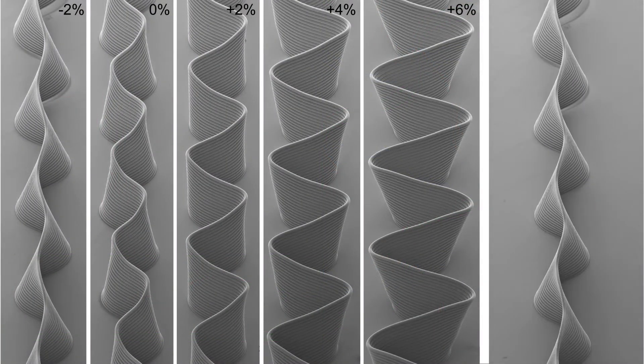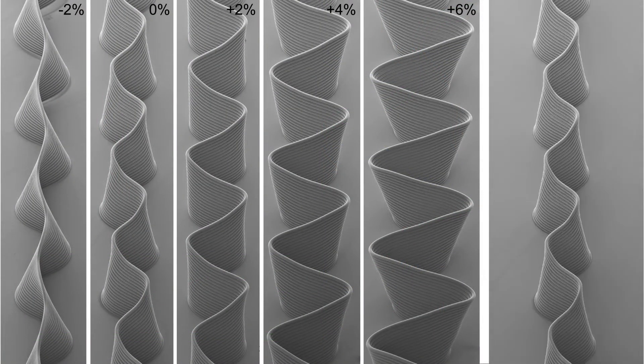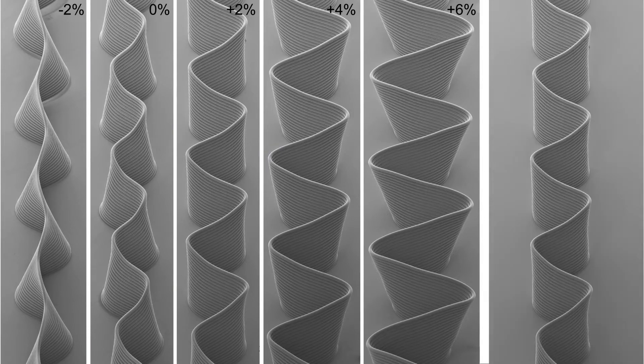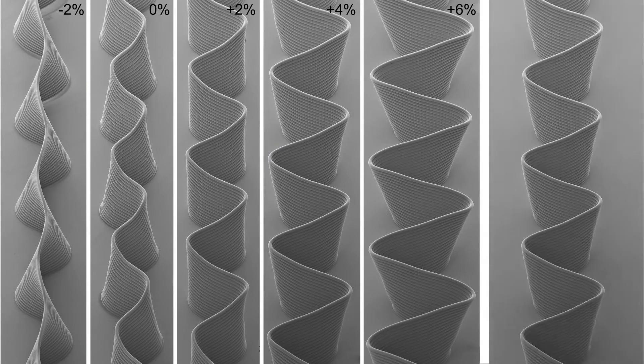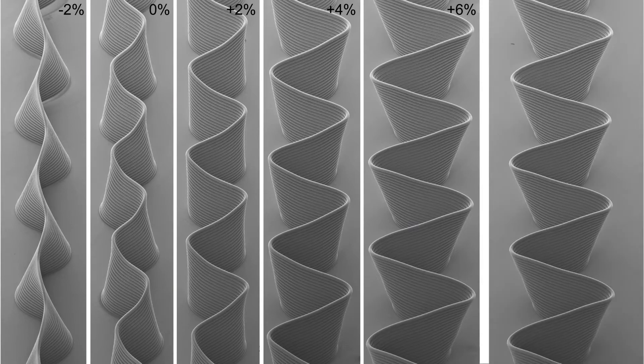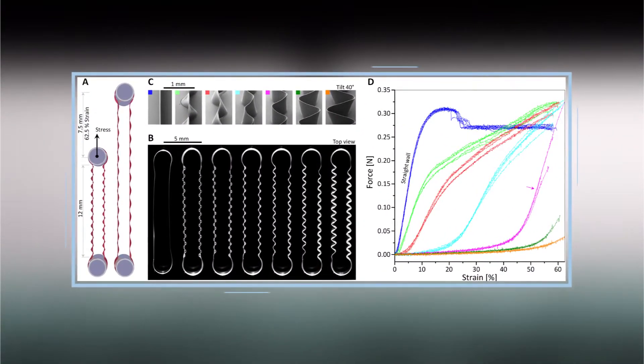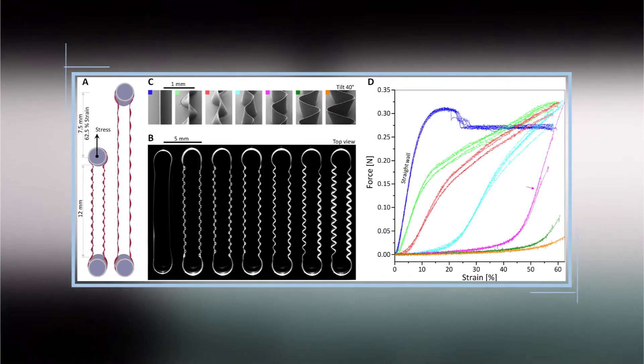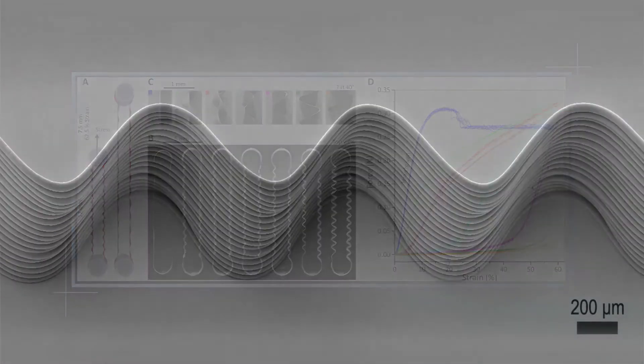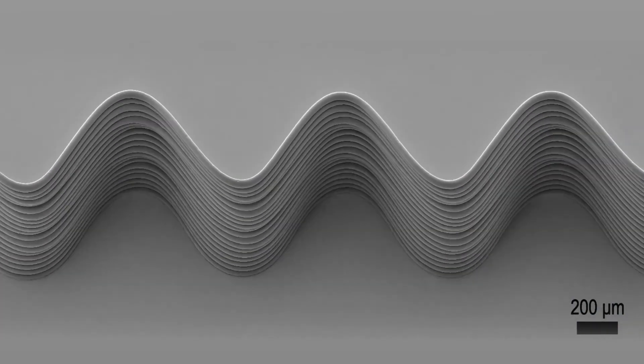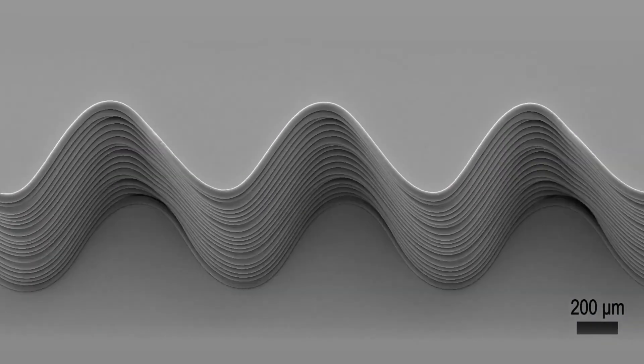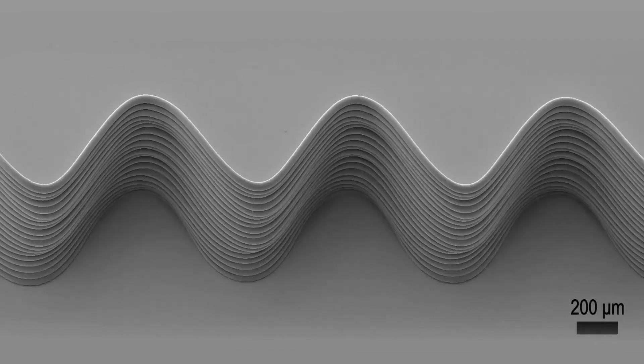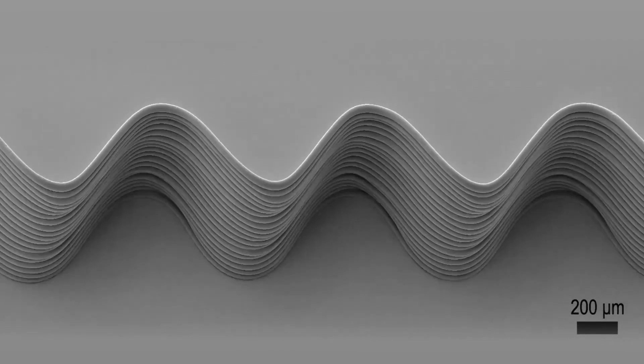The scientists found that they could accurately control the direction and magnitude of this tilting by introducing very small changes in the printing path of each layer, thereby deciding not only the geometry but also the mechanical properties of sinusoidal prints. They call their technique micro-scale layer shifting, because they deliberately use these shifts in printing path to control the layer-on-layer positioning.